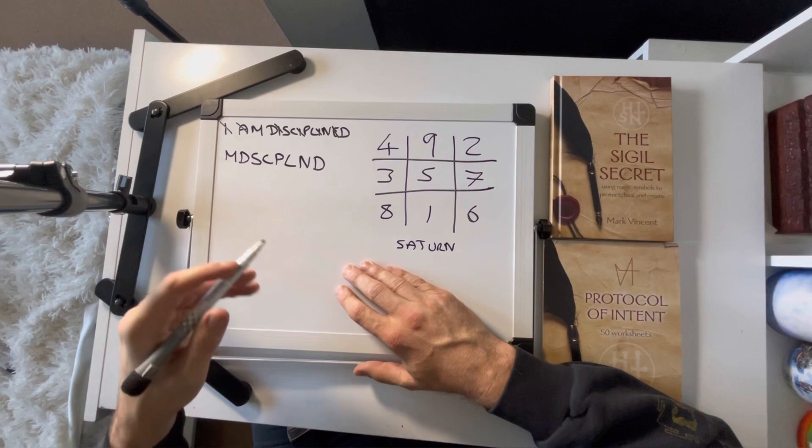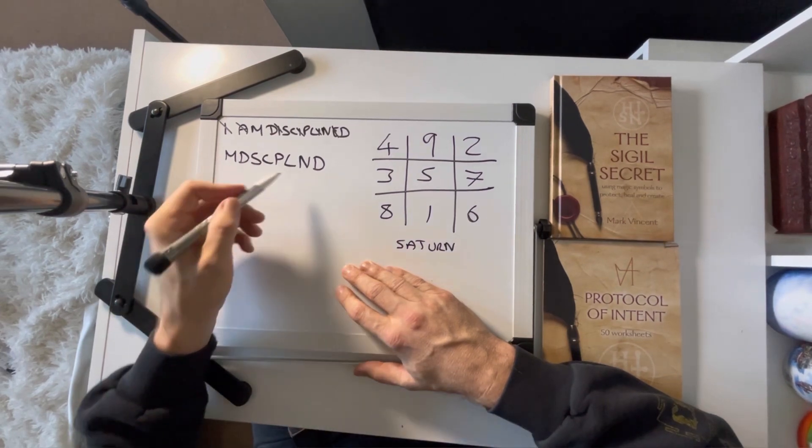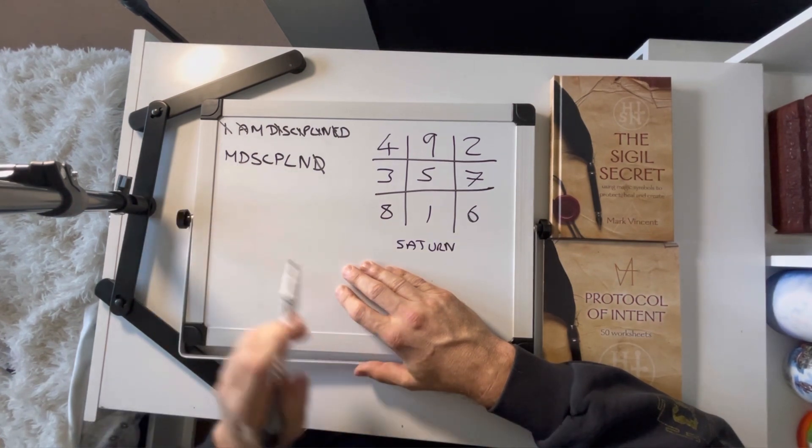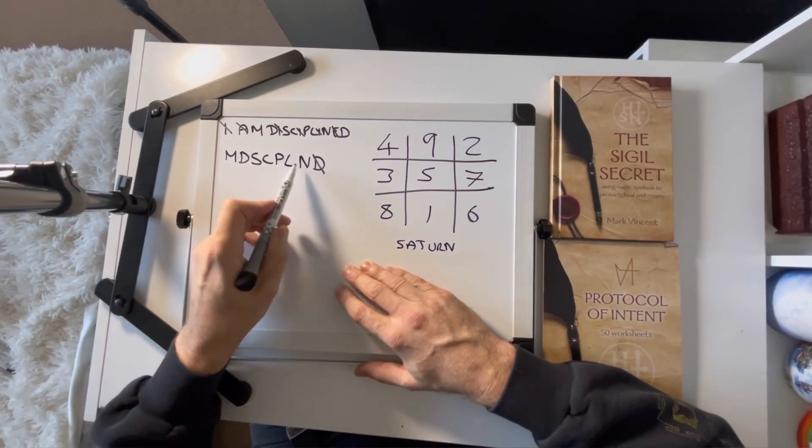Okay, so we can then just remove any duplicates. So we've only got, I think it's just the D there. Yes. So M, D, S, C, P, L, N.